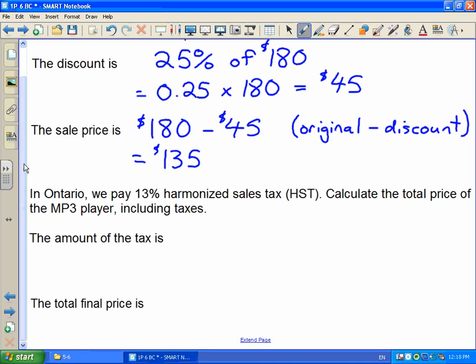It doesn't end there, because on top of the sale price we have to pay 13% harmonized sales tax, or HST. That gets added to the sale price we have. We want to calculate the total price of the MP3 player including taxes. First, the amount of the tax is 13%, but what is it 13% of? Not the original price, but the sale price. So we want to figure out 13% of 135.